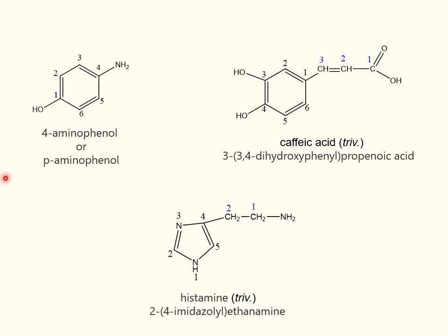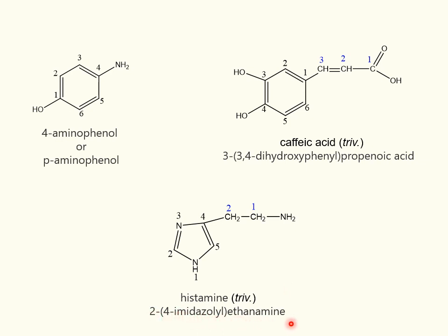The principal characteristic group in histamine is situated in a side chain. The heterocyclic substituent retains its numbering. Thus, the systematic name of histamine is 2-(1H-imidazol-4-yl)ethanamine.